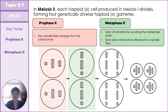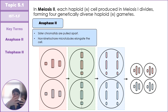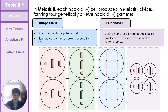Once all sister chromatids are lined up, anaphase II pulls them apart to opposite poles while non-kinetochore microtubules lengthen the cell in preparation for cytokinesis. During telophase II, chromosomes arrive at the poles, nuclear envelopes begin to reform, and chromosomes decondense back into chromatin. We are left with four final haploid daughter cells.